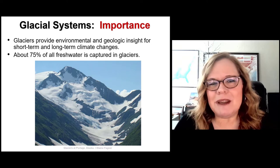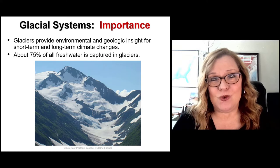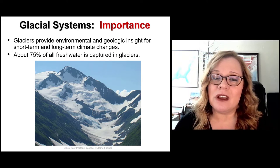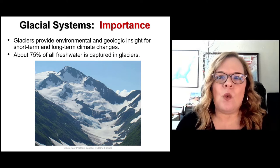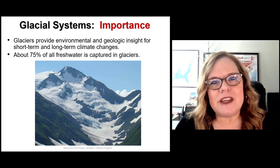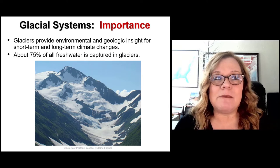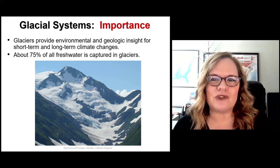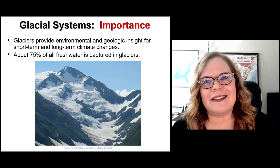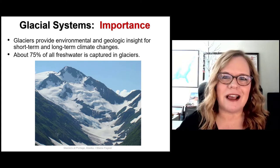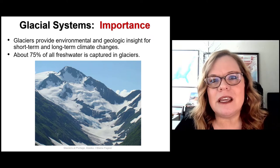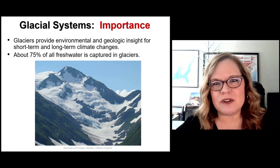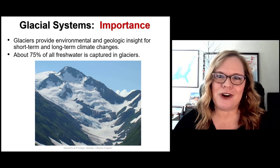Glacial systems hold clues. Glacial ice in particular captures real data — we can actually see the chemical makeup of the atmosphere when the ice was made, captured in places like Greenland and Antarctica. Greenland has the most complete continuous ice record. We can also see the amount of volcanic dust in the atmosphere, and sometimes even biological — especially microbial — life. Importantly, glaciers contain about 75 percent of all freshwater resources on the planet.